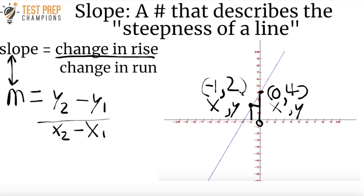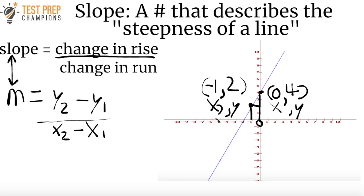Next we want to use the formula, but how do we know which x is x1 and x2, and which is y1 and which is y2? You get to decide — the key is that you just need to keep the ones and the twos together. So I can make negative 1 be x1, but if I do that, then I have to make 0 be x2. And since I made negative 1 x1, this becomes y1 and 4 becomes y2. Alternatively, you can make negative 1 be x2 — that's perfectly fine too.